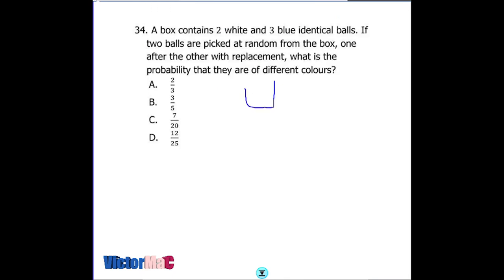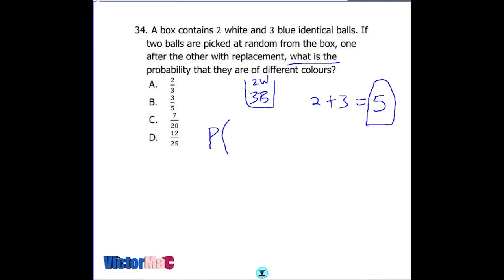The next question on probability says a box contains two white balls and three blue identical balls. If two balls are picked at random one after the other with replacement — meaning when we pick any ball the total remains five — what is the probability that they are of different colors? So either the first pick is blue and second is white, or the first is white and the second is blue.